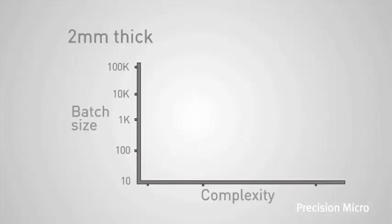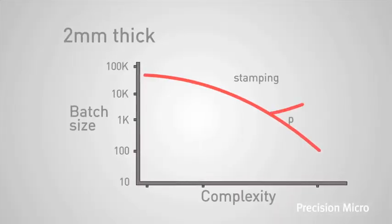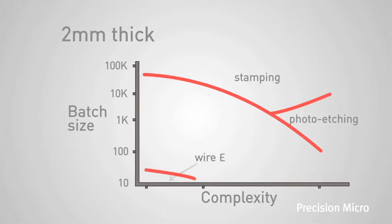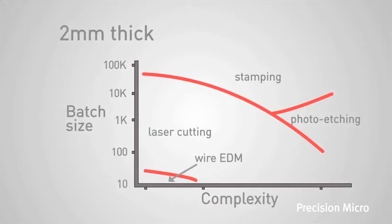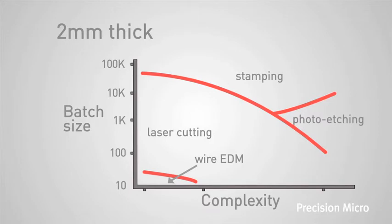If we look at a two millimeter thick simple component, it becomes less economic to make small quantities by wire electrode discharge machining, and photo chemical machining is pushed out to a certain extent by laser cutting because it takes a long time to etch through very thick material.